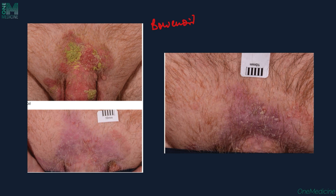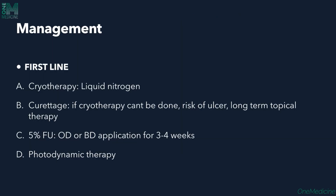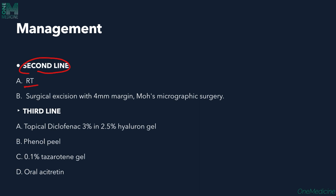Management of Bowen's disease: first-line therapy is cryotherapy with liquid nitrogen or curettage if cryotherapy cannot be done, though there is a risk of ulceration. Long-term topical therapy with 5-fluorouracil applied once or twice daily for three to four weeks, and photodynamic therapy, are also first-line options. Second-line therapy includes radiotherapy and surgical excision with a 4mm margin using Mohs micrographic surgery. Third-line therapy includes topical diclofenac 3% in 2.5% hyaluronic acid gel, phenol 0.1%, and azelaic acid or retinoid gel.